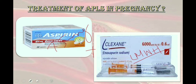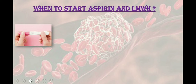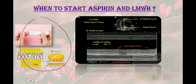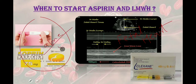Regarding when to start treatment: start aspirin when the pregnancy is confirmed, and low molecular weight heparin when fetal heart is seen on ultrasound. If aspirin alone is started, the take-home baby rate is only 40%, but if aspirin and low molecular weight heparin are started combined, the take-home baby rate rises to 70%. Note that some studies have disputed improved pregnancy outcomes with low molecular weight heparin compared to aspirin alone.